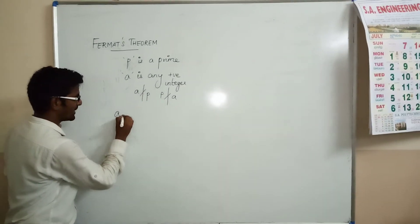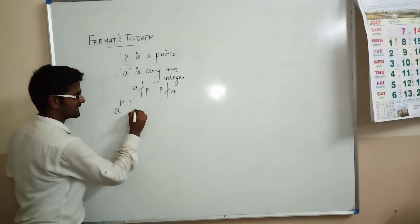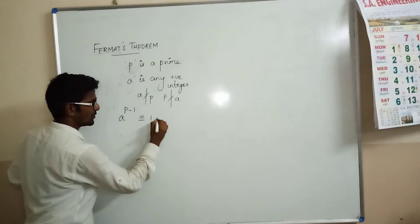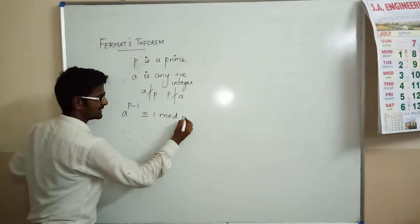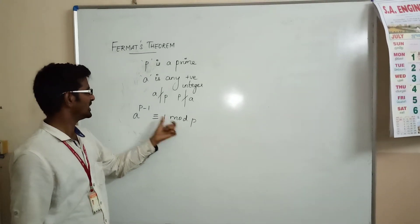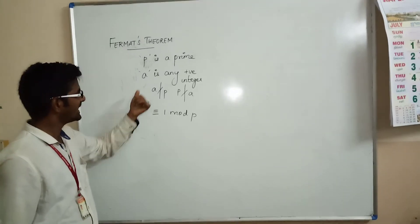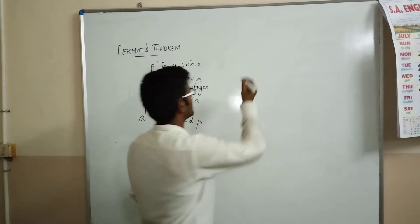then a^(p-1) is congruent to 1 mod p. So Fermat's theorem holds true if p is a prime number and a is any integer that is not divisible by p. For example,